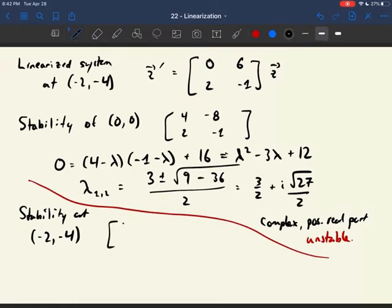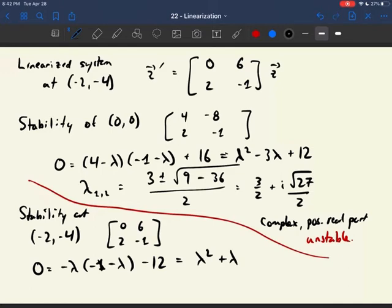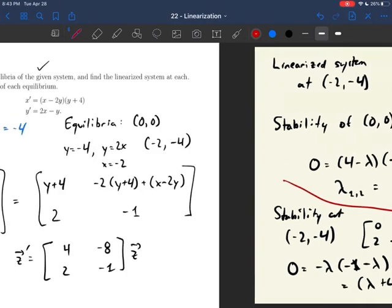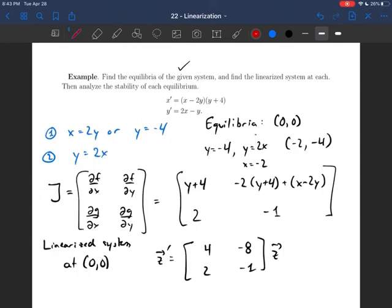And then finally, to figure out the stability at (−2, −4), I need to find the eigenvalues of my matrix 0, 6, 2, −1, so I'm going to get 0 equals −λ times (−1 − λ), minus 12, which I can factor as (λ + 4)(λ − 3), so my eigenvalues are λ = 3, and λ = −4. Now, since at least one of them is positive, that means that this is also unstable. It only takes one positive eigenvalue to make something unstable.